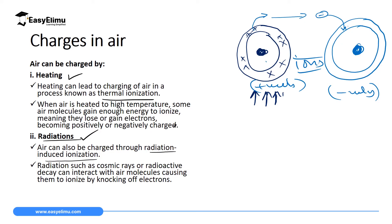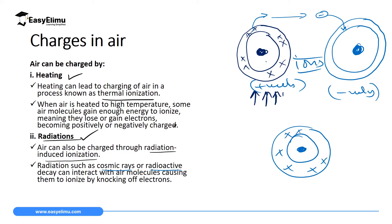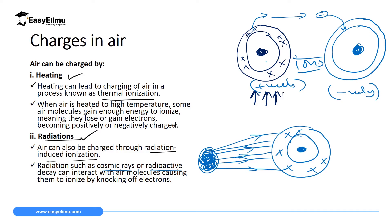Another way of charging air is through radiation, in what we call radiation-induced ionization. In radiation-induced ionization we use rays like cosmic rays or radioactive rays. If you have particles of air here — let's say oxygen — this atom has six electrons in the outermost energy level. If you have a radioactive substance here which is emitting serious rays, such as X-rays, gamma rays, and alpha rays, when these rays hit the surface of these atoms, the electrons in the outermost energy level will gain enough kinetic energy.